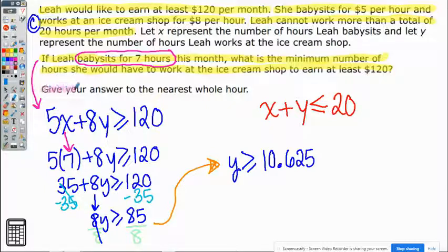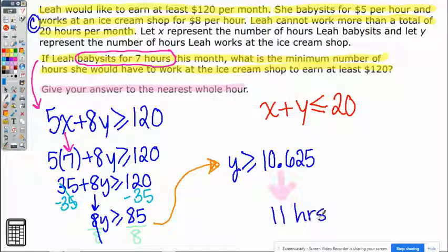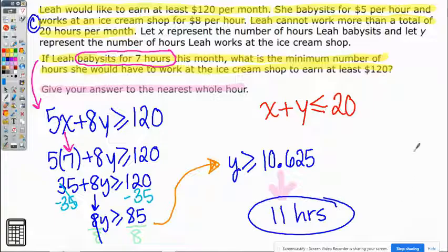But if you read the last part of the question, give your answer to the nearest whole number. So I need to take this and change it. Would you round up or would you round down? You would round up because this number is bigger than a 5, so you would say 11 hours as your final answer.